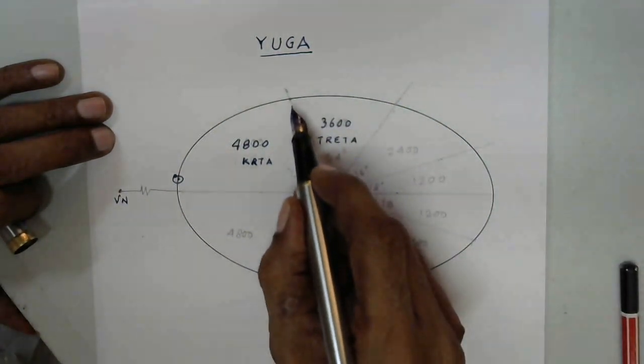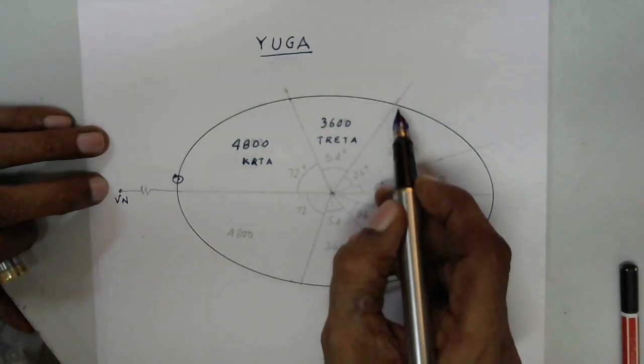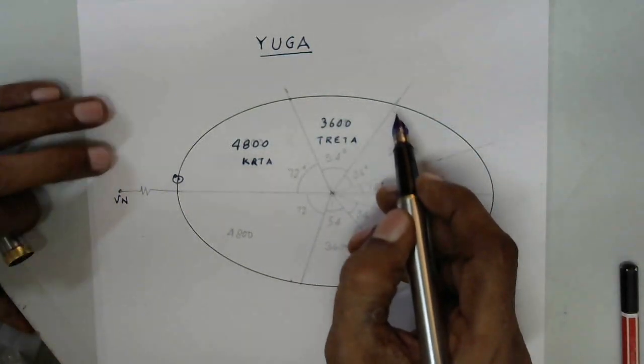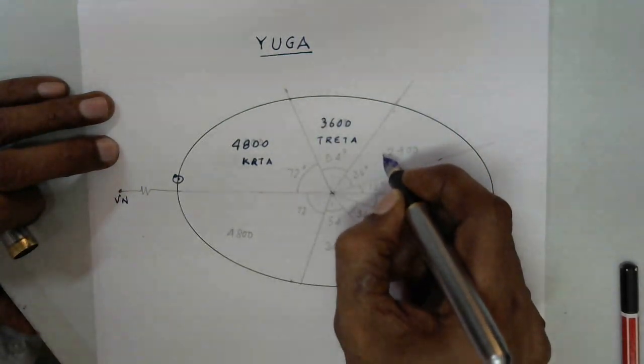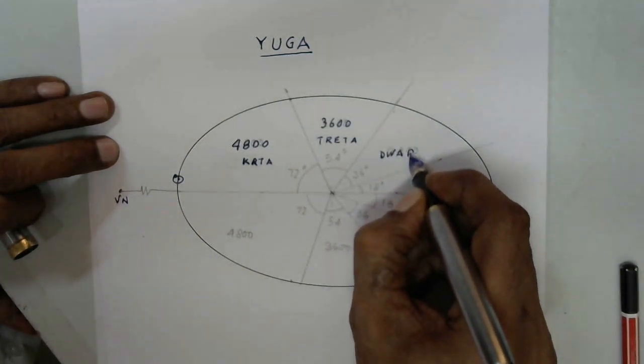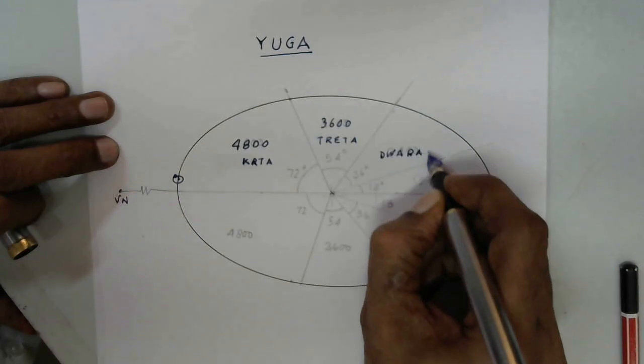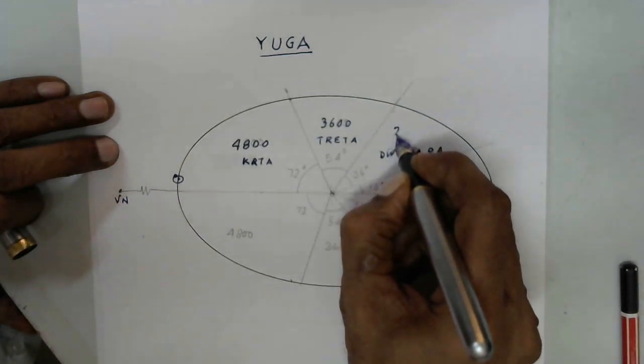Sun again moves further away from the Vishnu Nabhi, and after the 3600 years are over it turns into what we now call Dwapar Yuga which is supposed to be 2400 years.